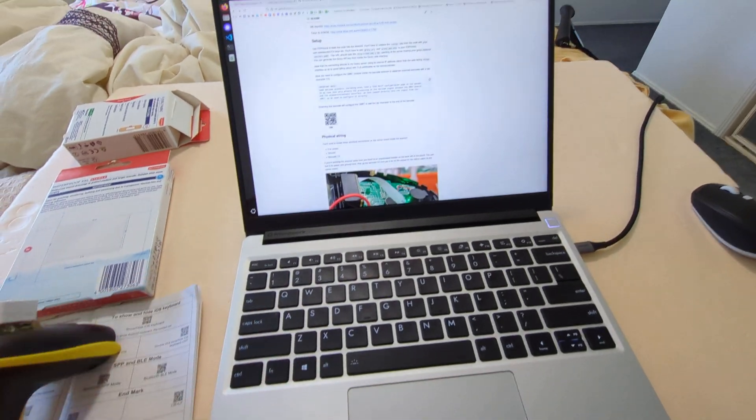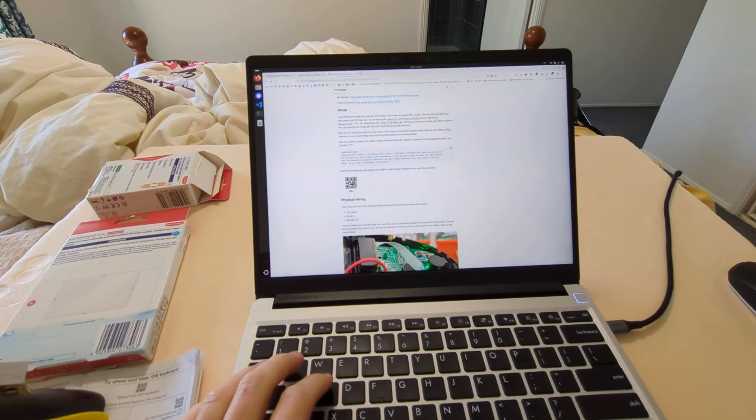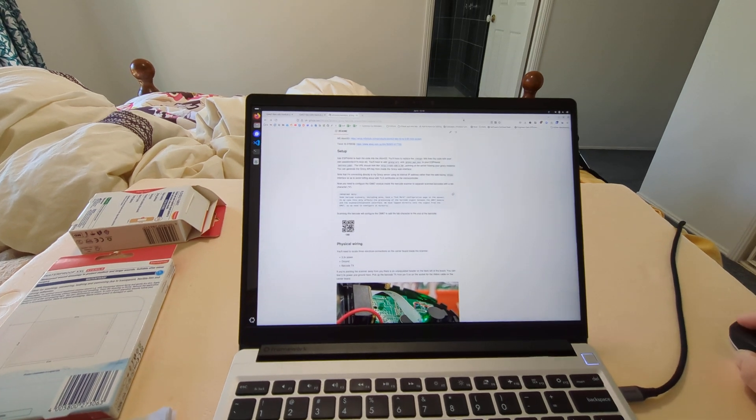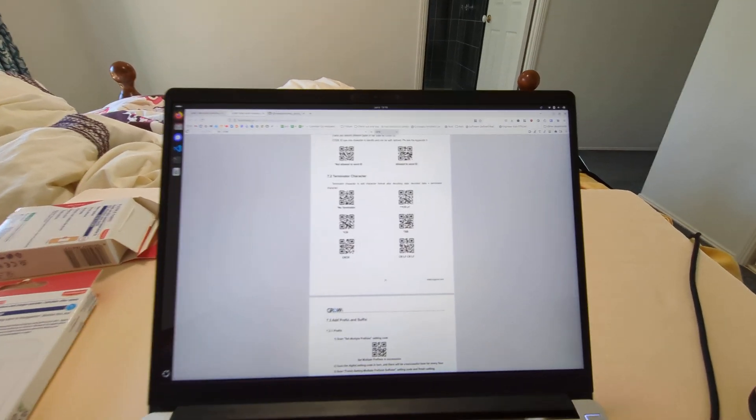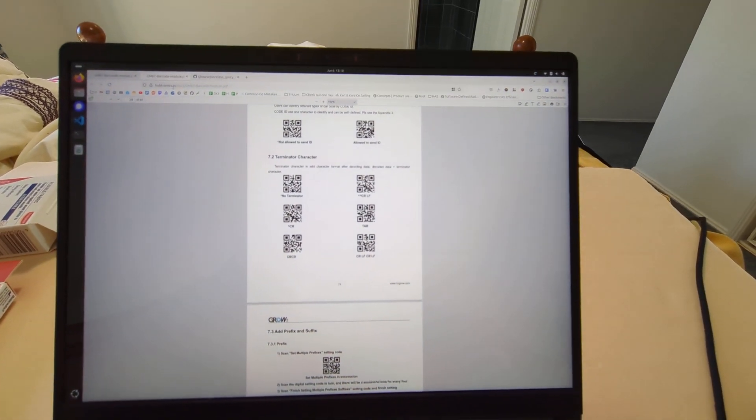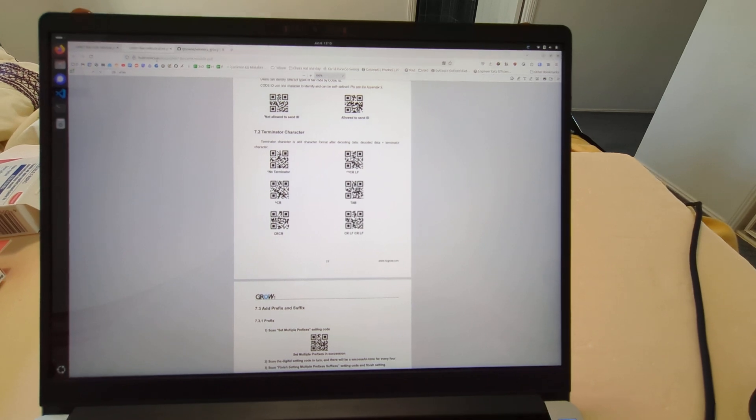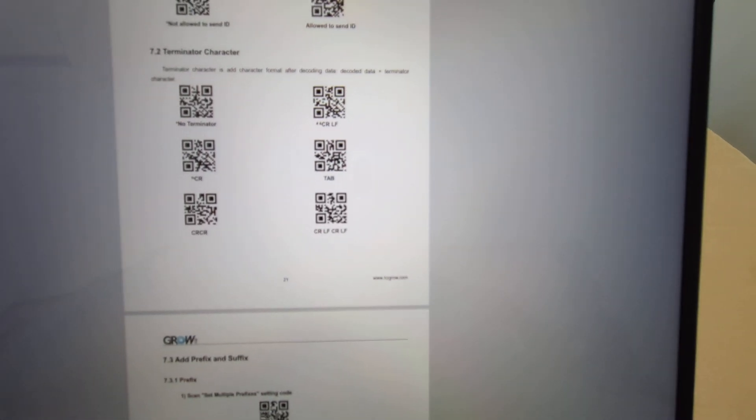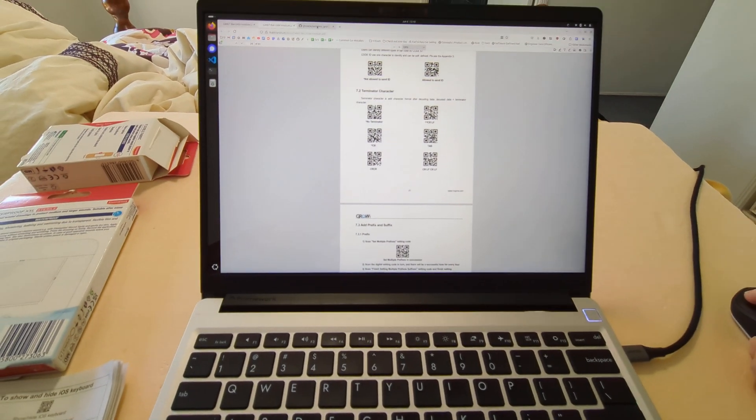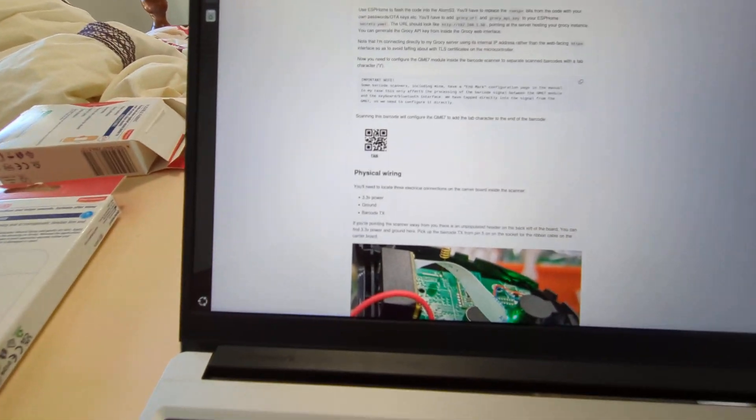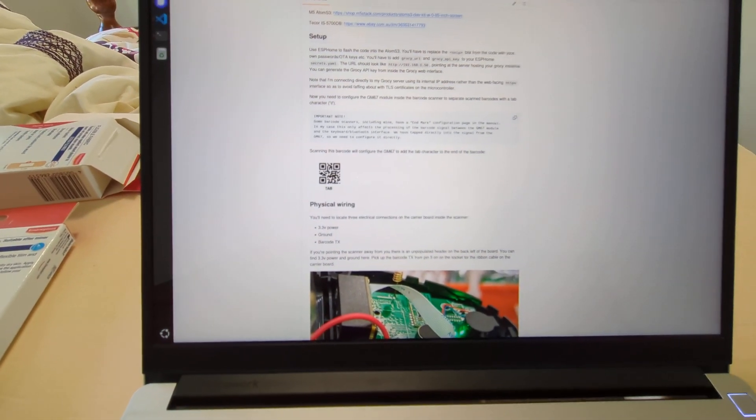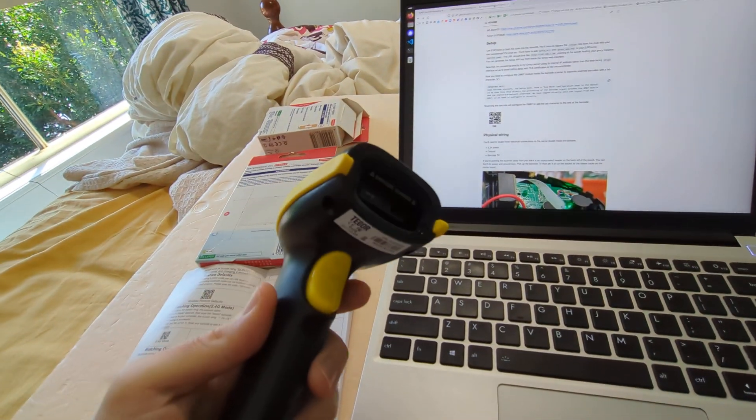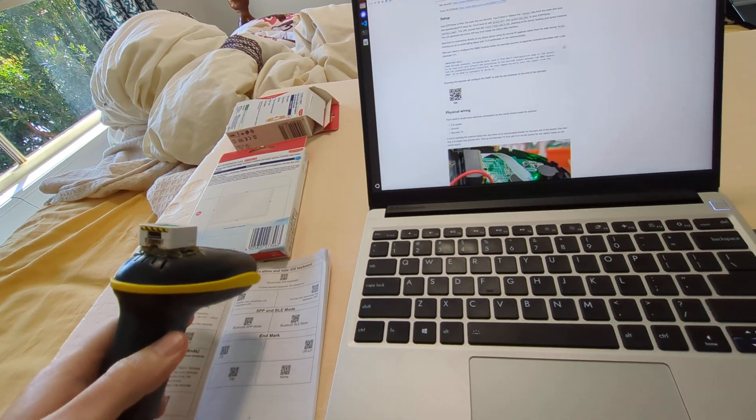To do that I pulled up the GM67 manual and it's got loads of extra configuration in here you can play with and one of those is the tab character or carriage return, carriage return line feed, et cetera. So I clipped that out and put it in the docs so you just need to scan that and then that makes the module send the tab character so you can rapidly scan stuff.